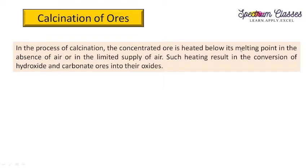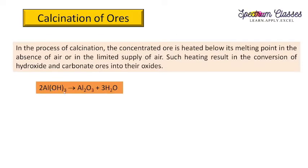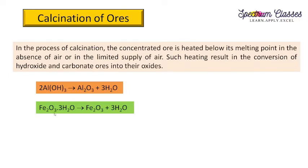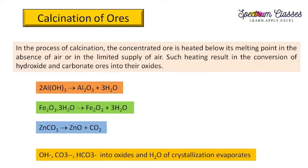In calcination, the concentrated ore is heated below its melting point in the absence of air or with limited air supply. This converts hydroxides and carbonates into their oxides. For example, aluminium hydroxide Al(OH)₃ gives Al₂O₃ plus 3H₂O. Fe₂O₃ loses its hydrated water on heating. Zinc carbonate (calamine, ZnCO₃) gives zinc oxide ZnO plus CO₂. No oxygen supply is needed in all these cases.